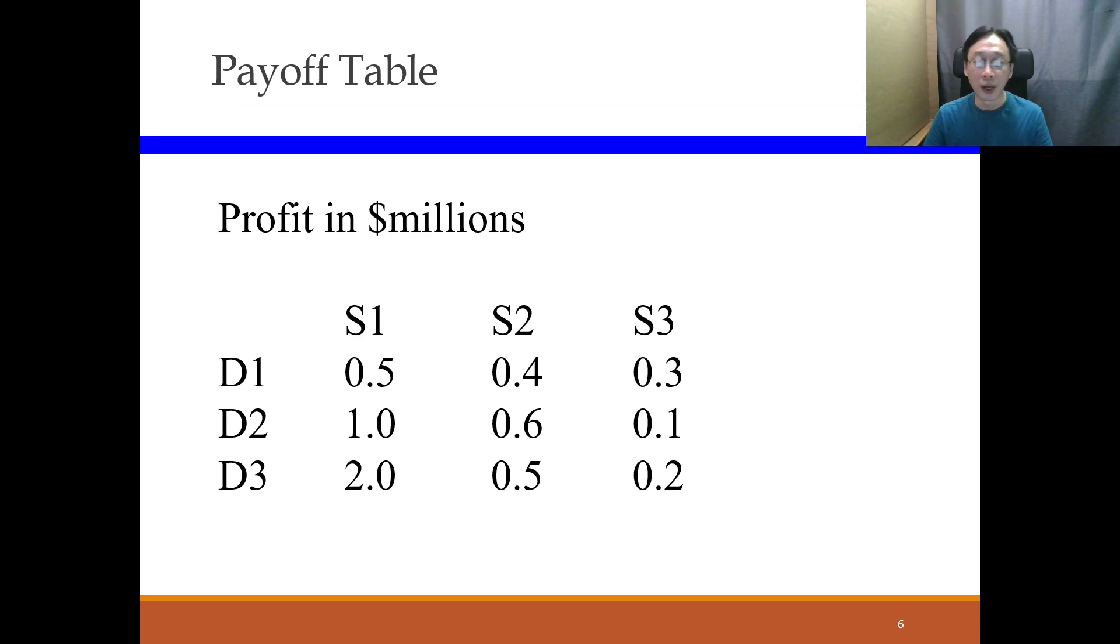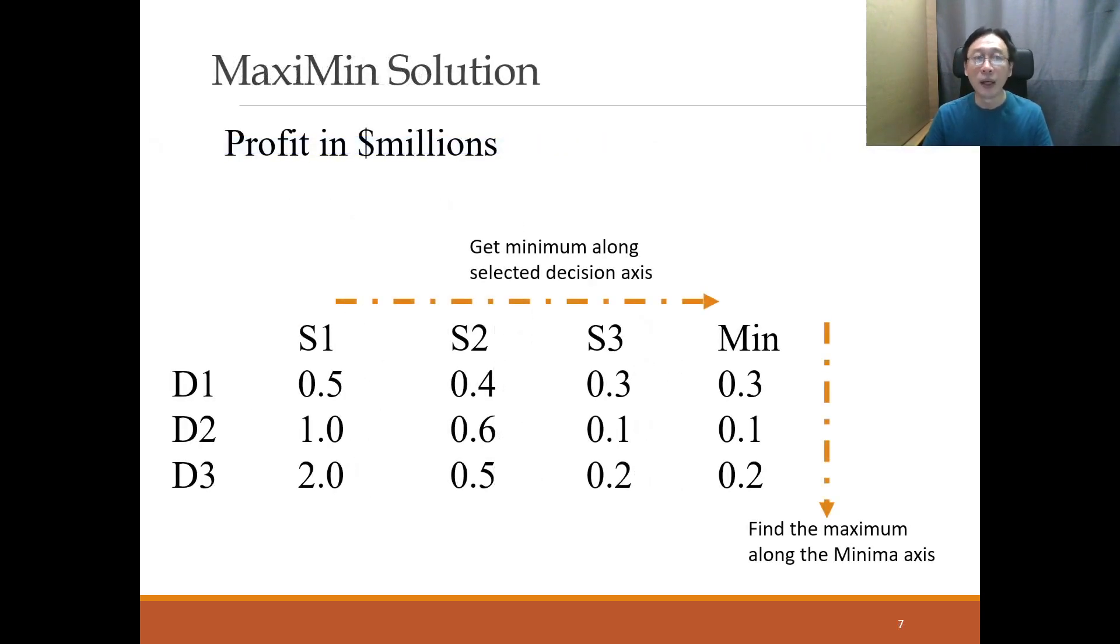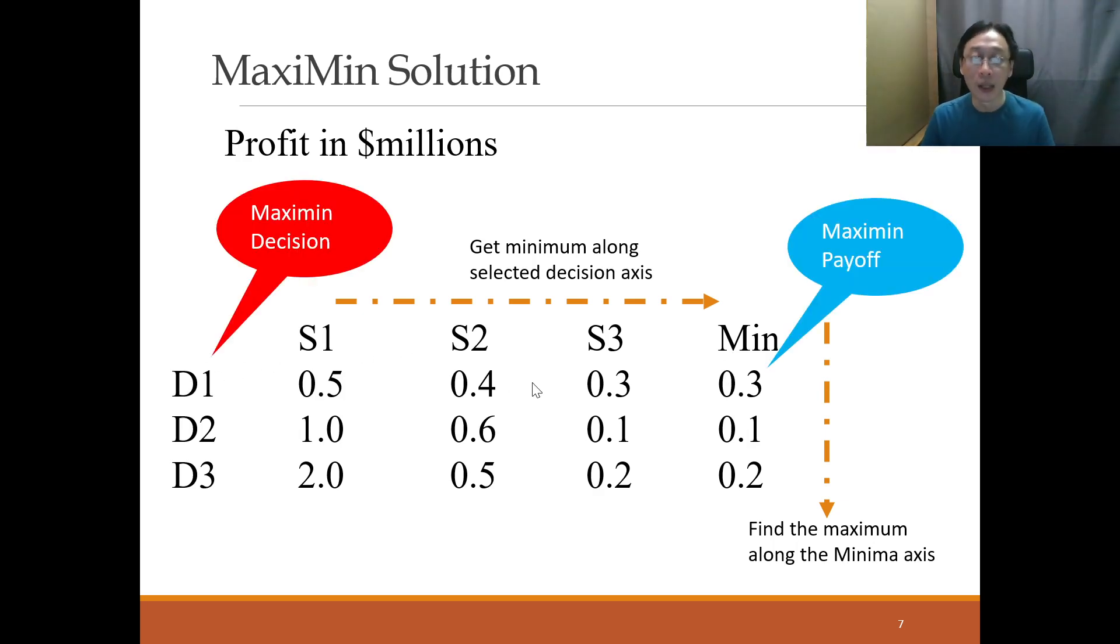So what I'm trying to do is to ensure that all the payoffs are all positive or at least non-negative. So they're all positive here. That will kind of reduce certain complexity. But let's see how we go from here. So we start from this table. The usual way in which you try to do Maximin decision making is to go along the decision axis. If I make decision D1, then I will encounter the lowest and I will record that and so on and so forth. And then after finishing that part, we try to find the maximum payoff along the min axis. So this is just a quick revision.